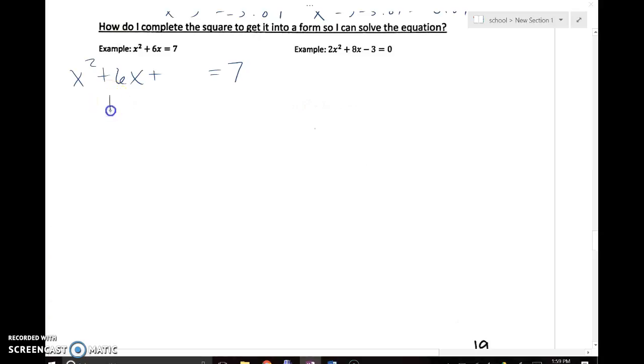The completing the square process requires us to do b over 2a quantity squared, where b is that second term. What I'm going to do is replace the c term with this because it's going to help me factor in a perfect square binomial.